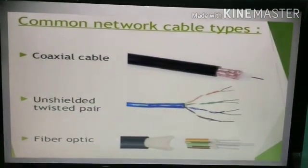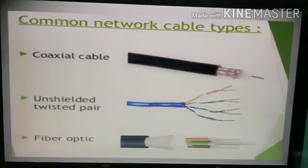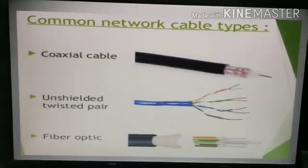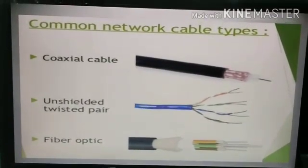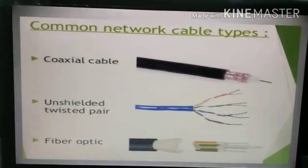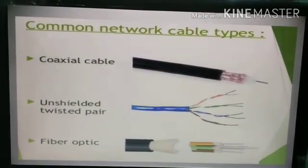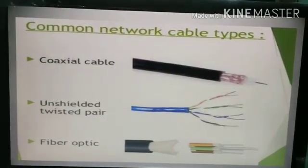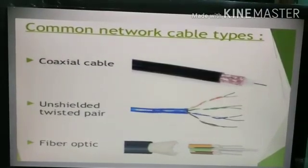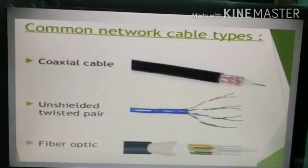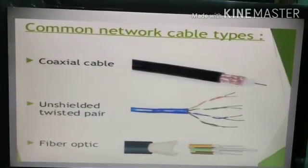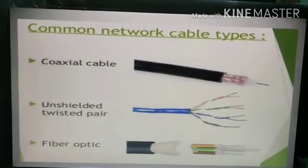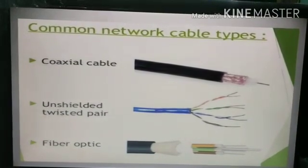Network transmission media is a path that carries the information or data from sender to receiver. There are two ways: guided and unguided. Guided means wired medium. Here we can see three different types of cables — coaxial cable, twisted pair cable, and fiber optical cable.